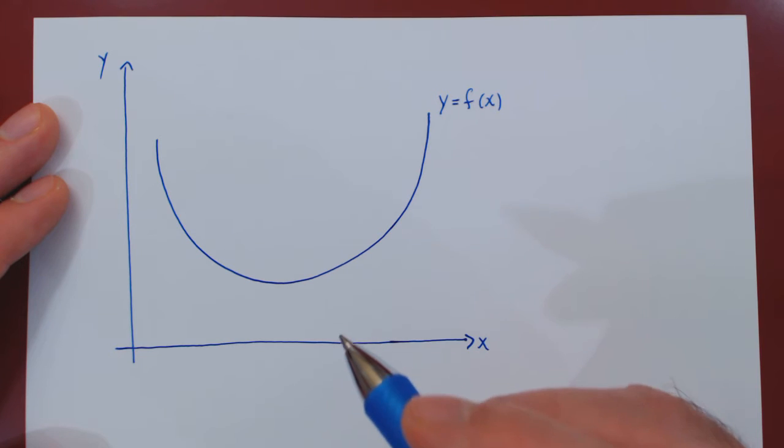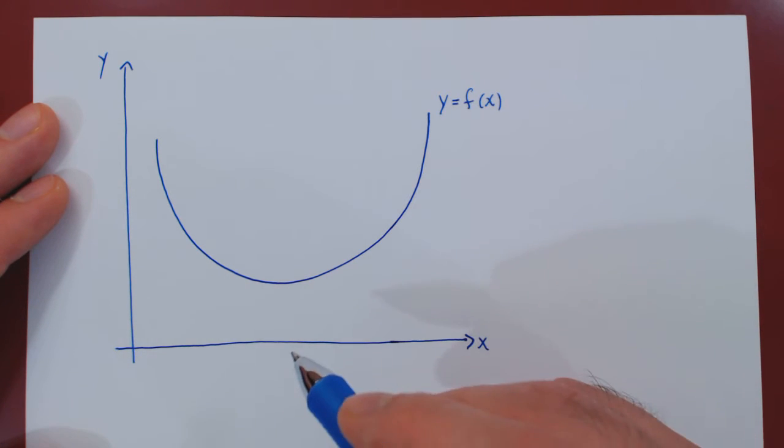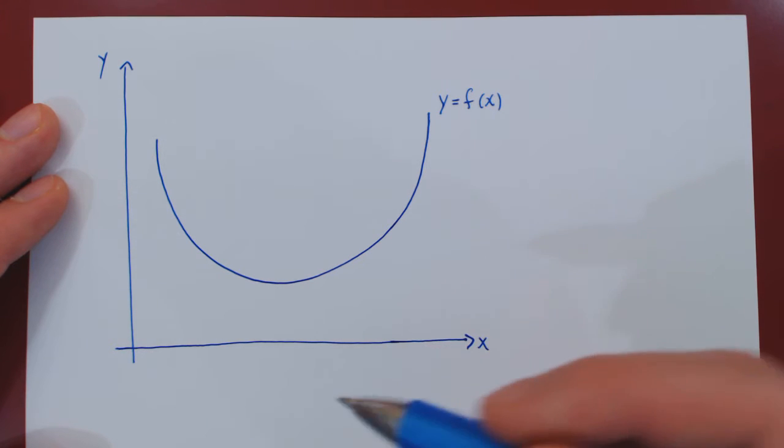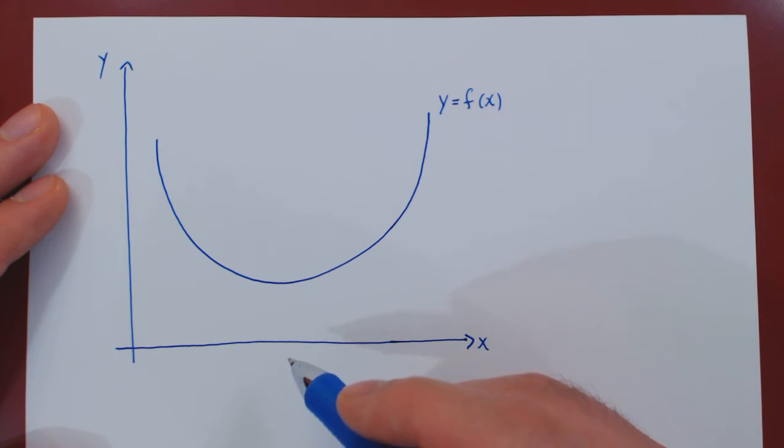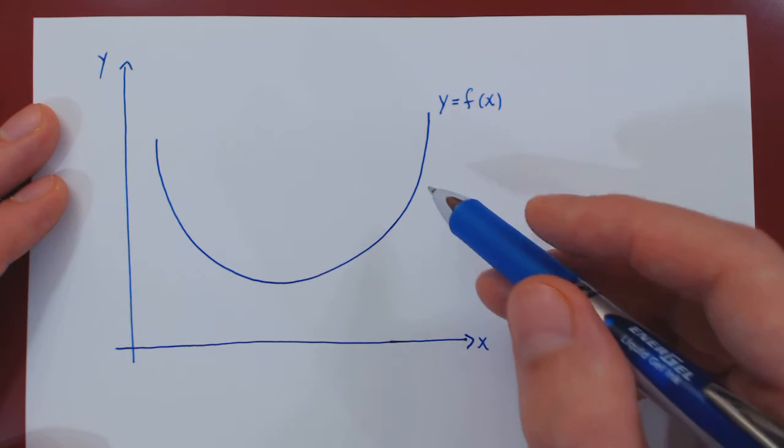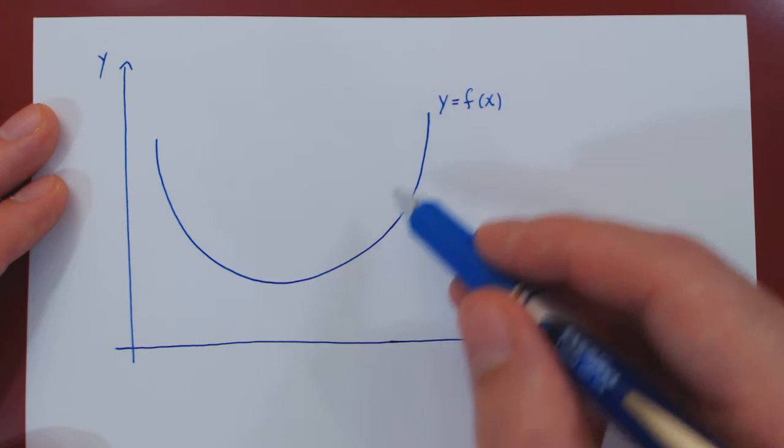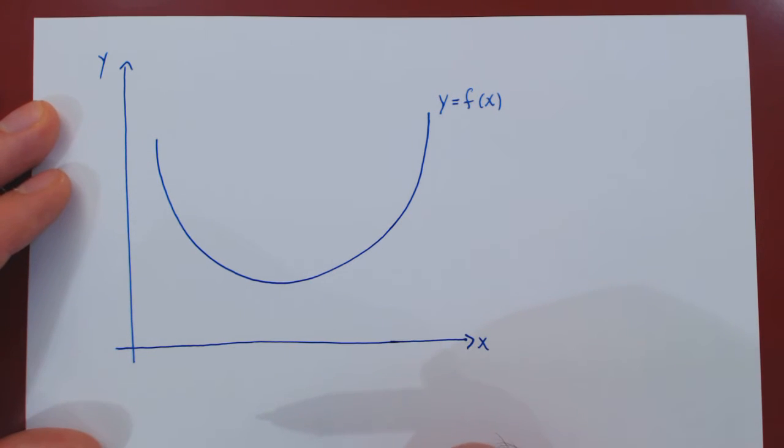And we know how to find the slope of a line, right? It is the change in y over the change in x. And can we use this idea, the fact that we know how to find the slope of a line, to then find a natural way of obtaining the slope of a function that is not a line but a curve? And the answer is yes.